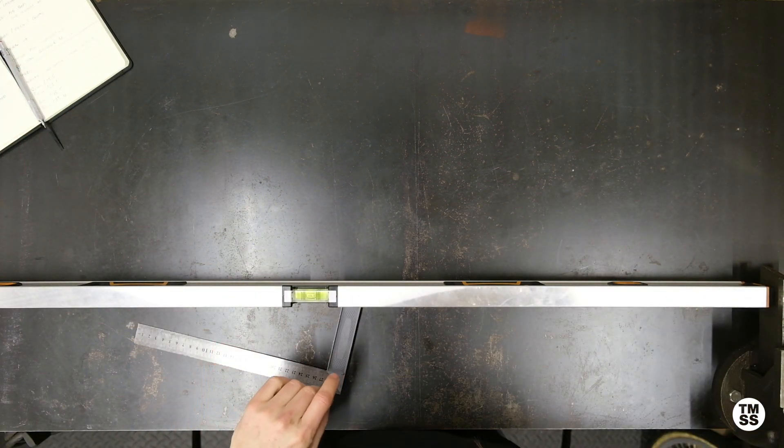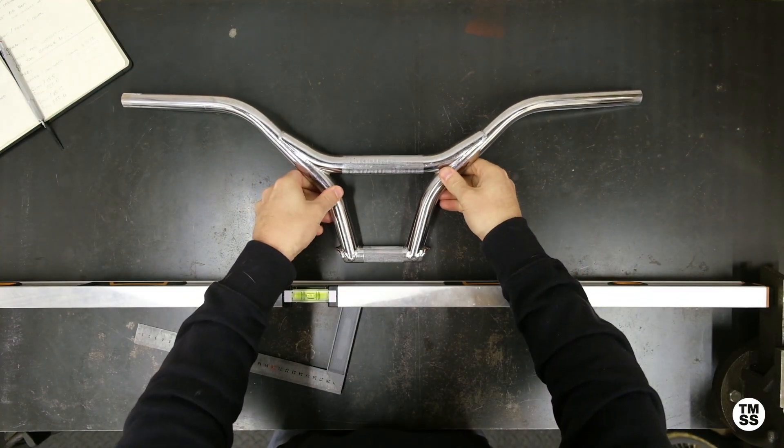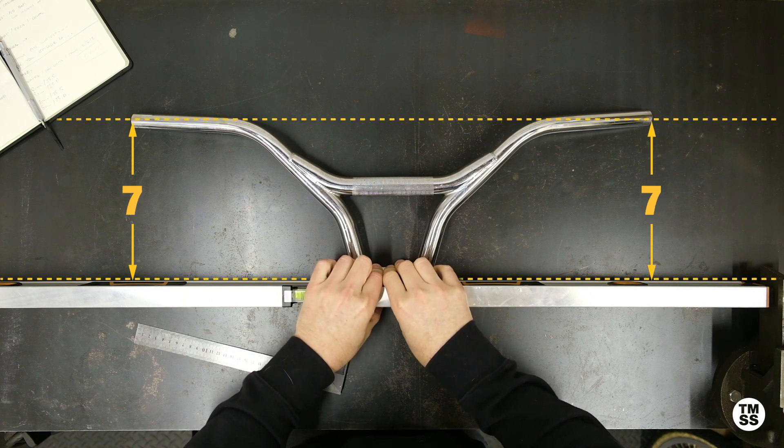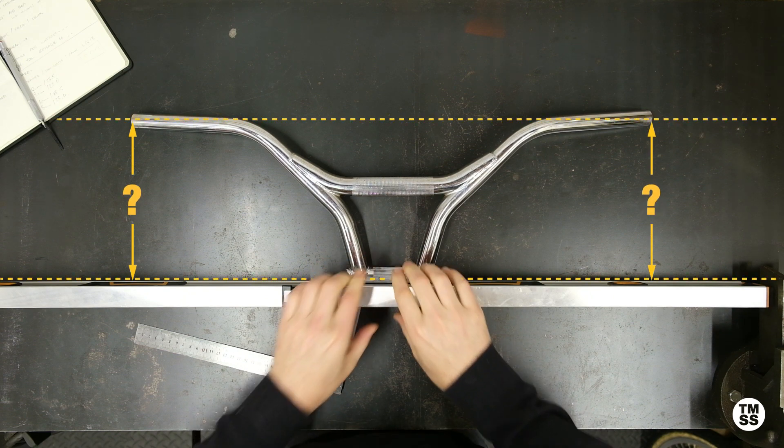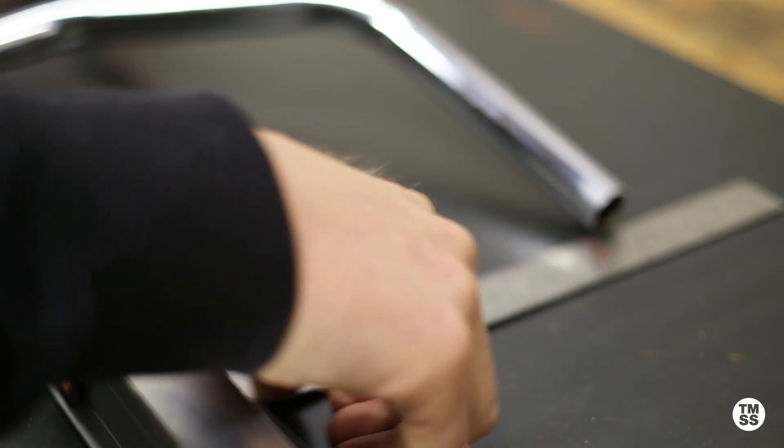First up, we're going to measure the rise. This is going to make sure that one side of the handlebars is not bent further up or down than the other. To do this, you're going to get your handlebars squared up against the straight edge and then measure from that straight edge up to where the handlebar touches the table.